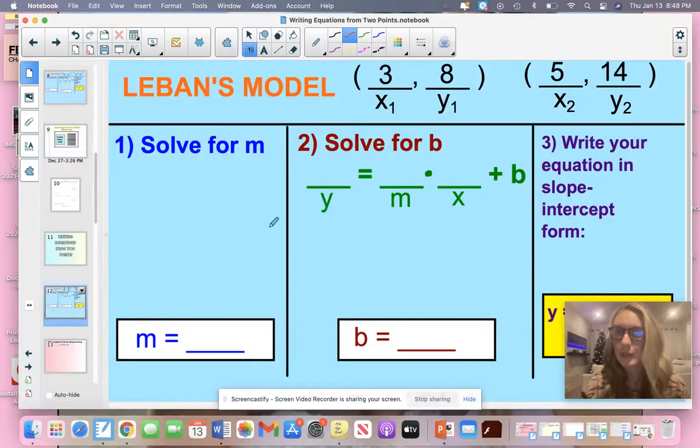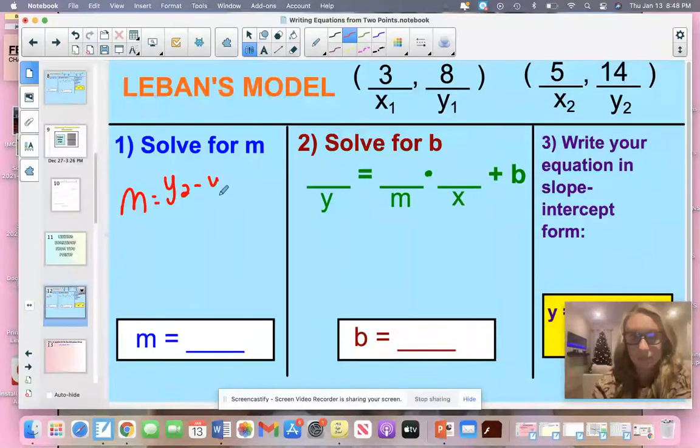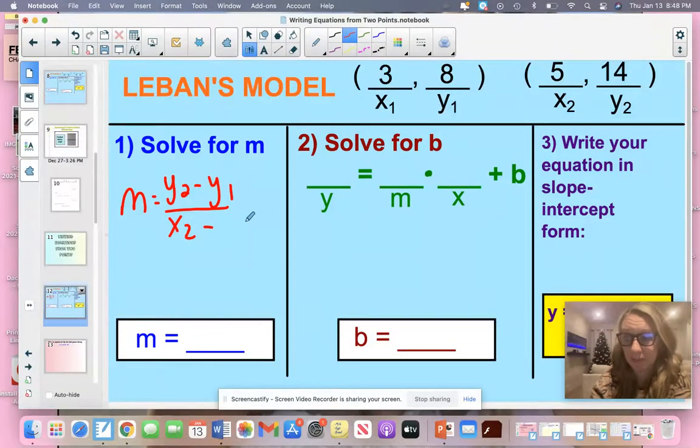So here we go. Imagine you are sitting there and I give you your test and I say, I need you to write an equation from the coordinate pairs that you see: 3, 8, and 5, 14. Now, you know how to do the first part. We're going to solve for M using slope formula. Remember, slope formula looks like this. Hopefully, we've done this enough times where you remember what this formula is.